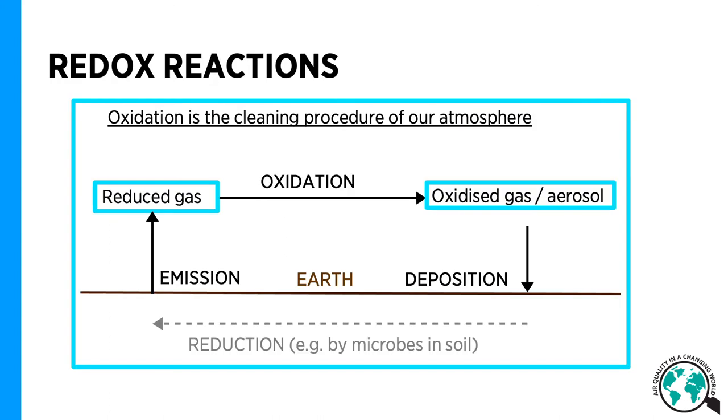Our atmosphere is very special as it is a strong oxidizing medium. Oxidation can be described as a loss of electrons, while reduction, which happens simultaneously and is the opposite of oxidation, can be described as a gain of electrons.